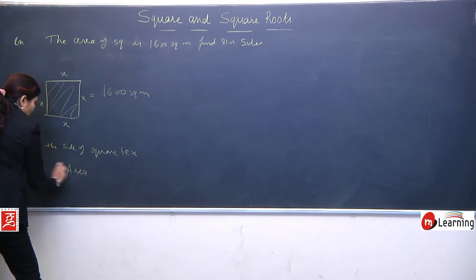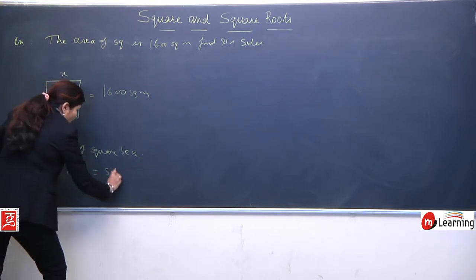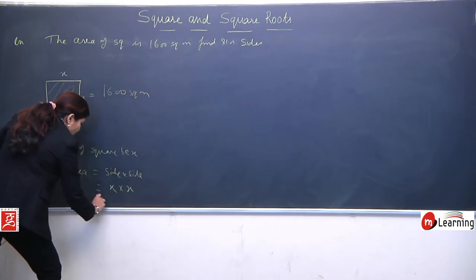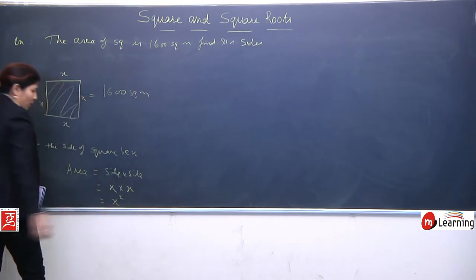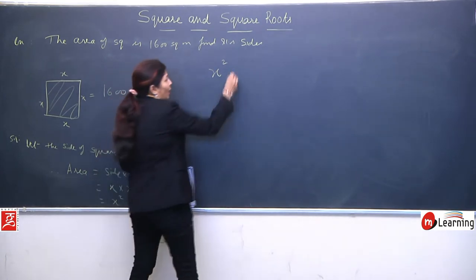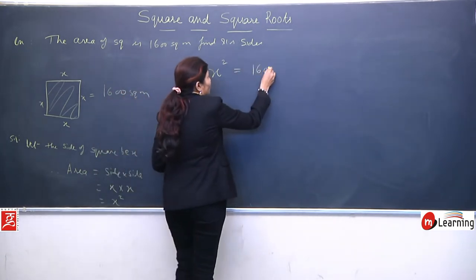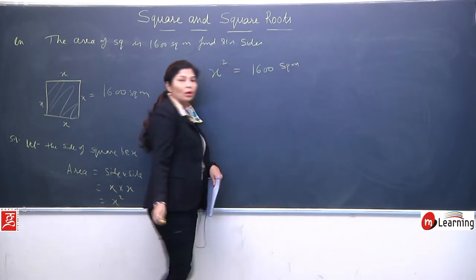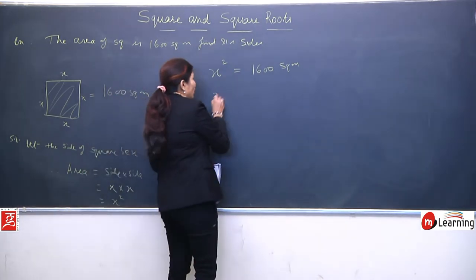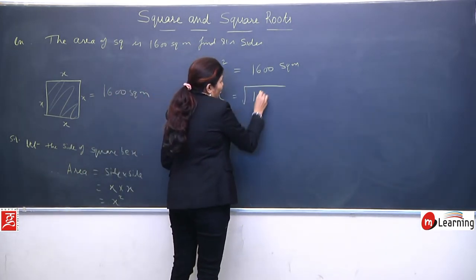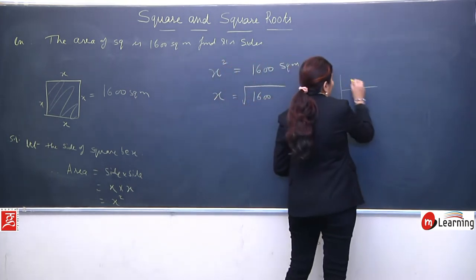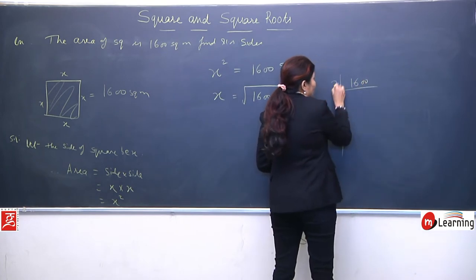First we'll assume in the solution: Let the side of the square be x. Now you'll write the area, so the area is side into side, means x into x, means x square. And the area value they have given us...